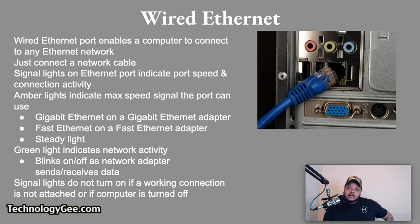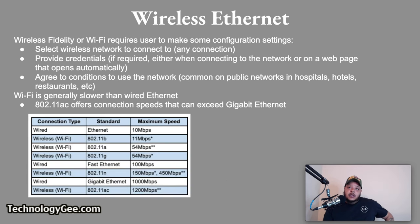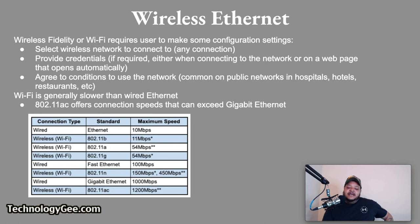This is what the network connection on the back of your computer looks like. Wireless Ethernet, also known as wireless fidelity or Wi-Fi, requires the user to make some configuration settings on the client device. The user must select the wireless network to connect to, provide credentials if required, and agree to the conditions of the network — this is common when using public networks in hospitals, hotels, restaurants, and similar locations.